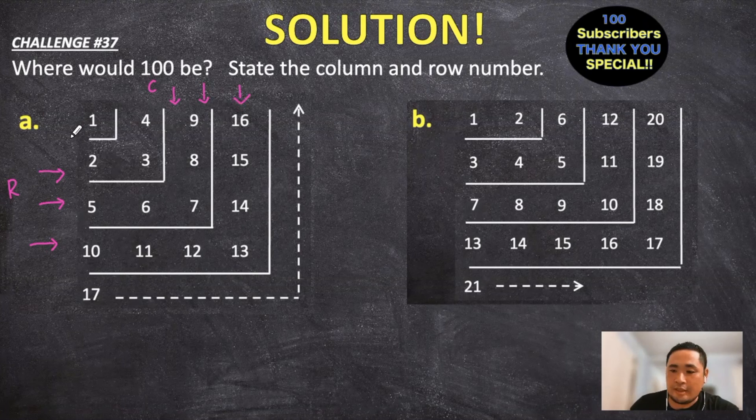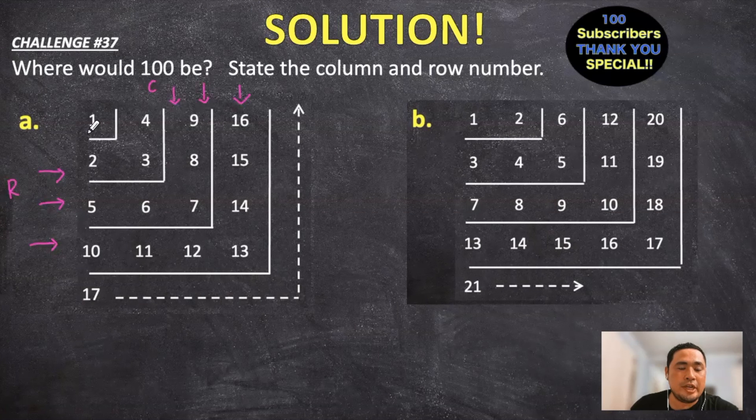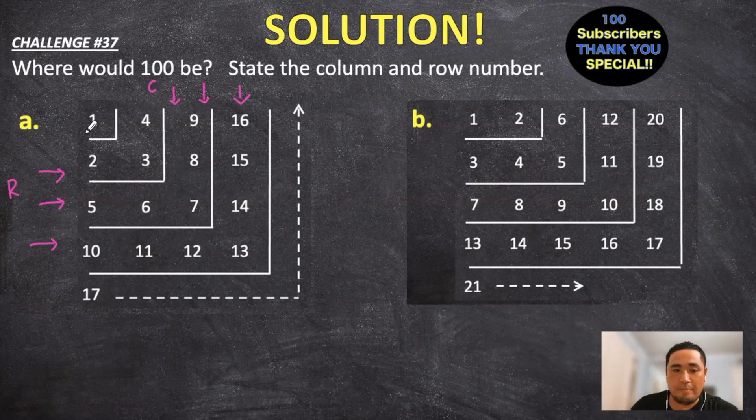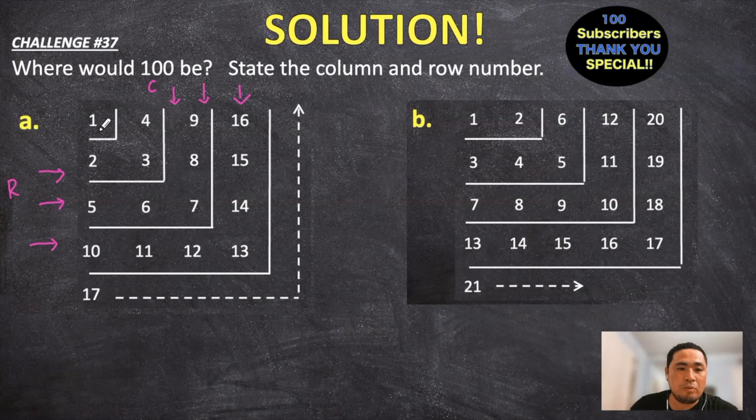If you look at the pattern of numbers here, it looks like it follows an L shape. Going from 1, and then it goes 2, 3, up to the 4, 5, 6, 7, and then 8, 9.